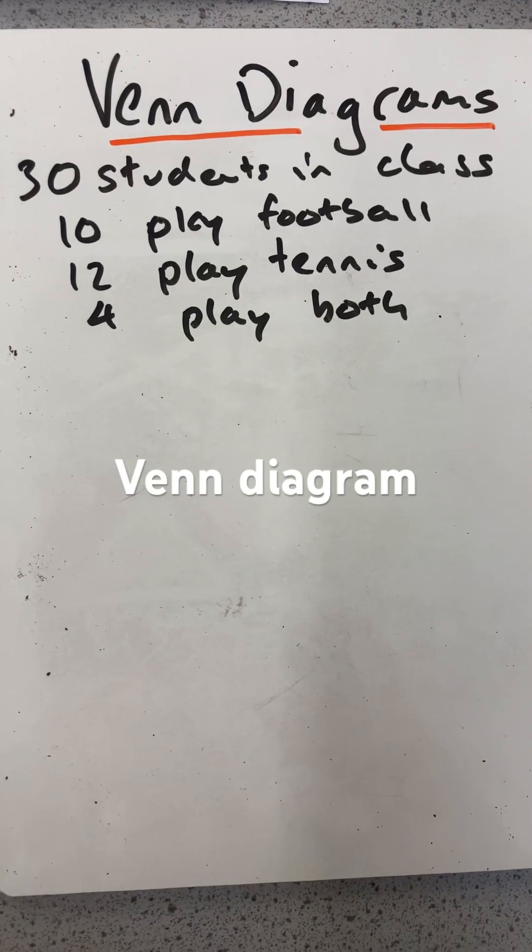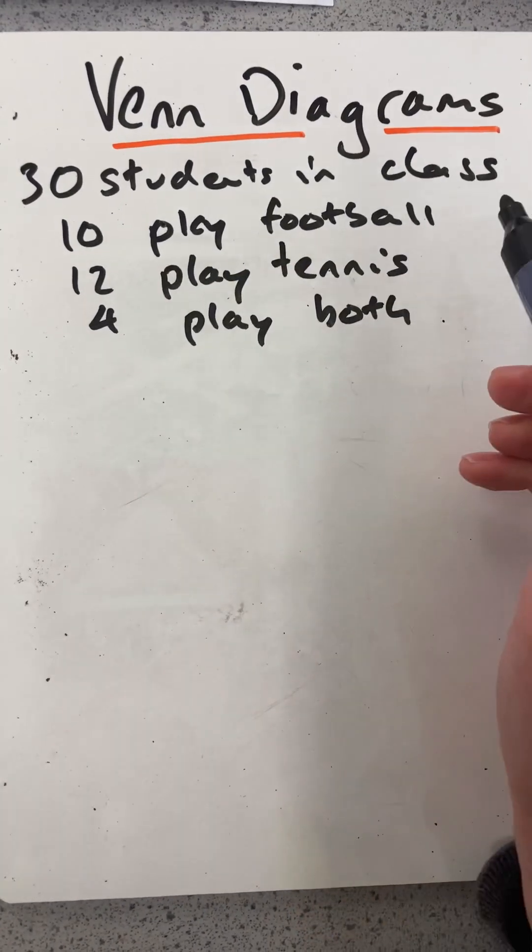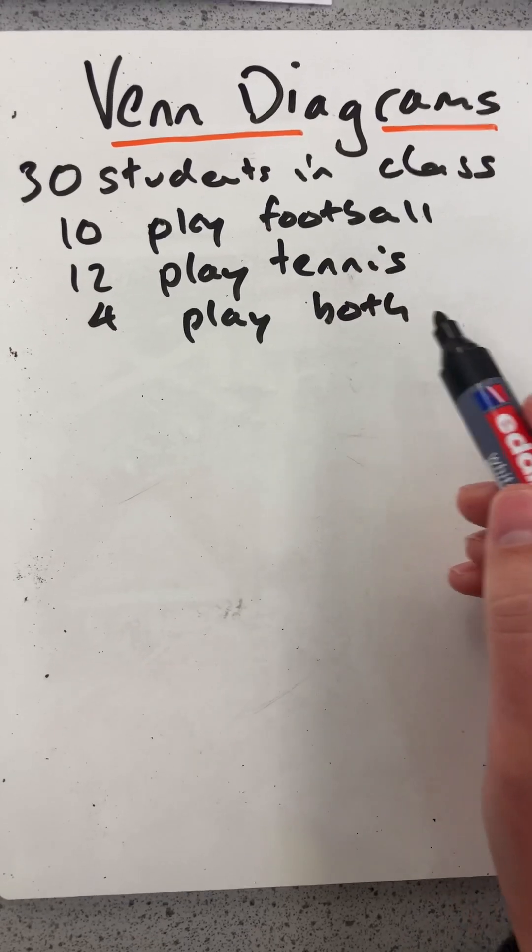Hello and welcome to Martin Maths. Let's look at Venn diagrams. Say we have 30 students in a class, 10 play football, 12 play tennis, and 4 play both.